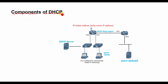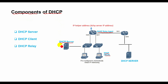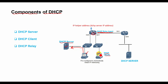DHCP is made up of numerous components such as the DHCP server, DHCP client, and DHCP relay. The DHCP server — typically either a server or router — is a network device that runs the DHCP service and holds IP addresses as well as related configuration information. The DHCP client is a device such as a computer or phone that connects to a network and communicates with a DHCP server. The DHCP relay manages requests between DHCP clients and servers.